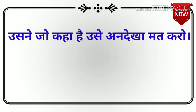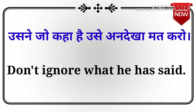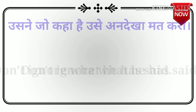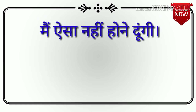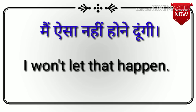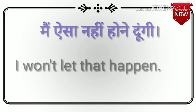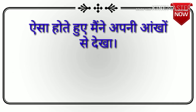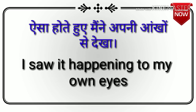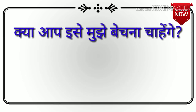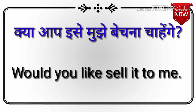Next sentence: उसने जो कहा है उसे अनदेखा मत करो. — Don't ignore what he has said. Next sentence: ऐसा नहीं होने दूँगी. — I won't let that happen. Next sentence: ऐसा होते हुए मैंने अपनी आँखों से देखा. — I saw it happening with my own eyes. Next sentence: क्या आप इसे मुझे बेचना चाहोगे? — Would you like to sell it to me?